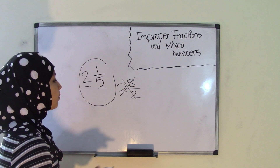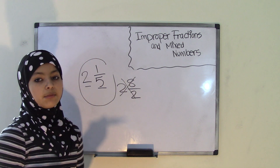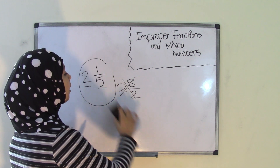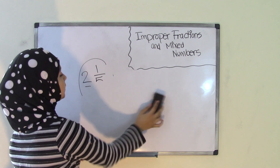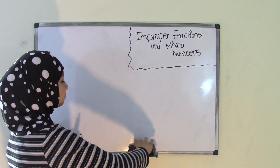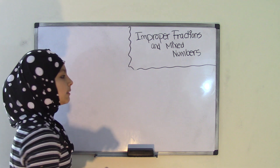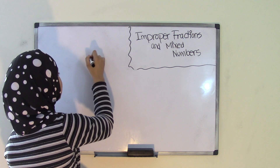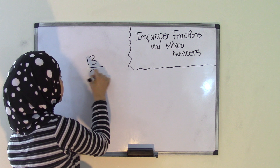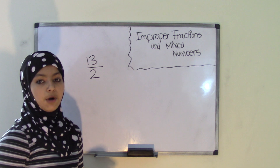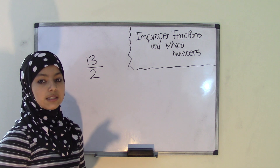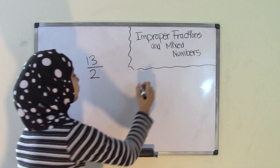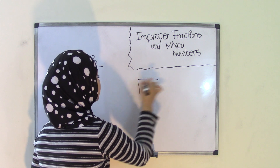So that is an example of a mixed number. Now that you have a pretty good idea of what improper fractions and mixed numbers are, let's go on and convert an improper fraction to a mixed number. I'm going to be taking the example of an improper fraction such as 13 over 2. To convert this improper fraction to a mixed number, simply divide the numerator by the denominator — so 13 divided by 2.